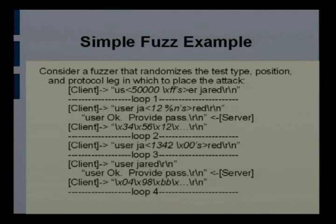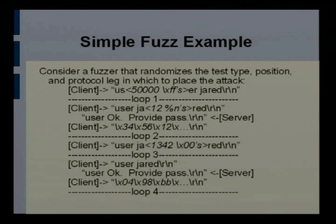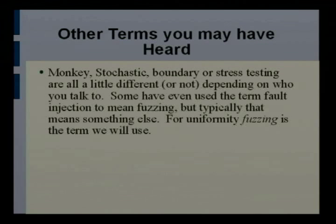In the first loop I send 50,000 FFs — maybe looking for long strings or how it handles non-ASCII data. In the second loop I insert percent-signs into the middle of the username. That's looking for format string bugs. These are called attack heuristics: sending a long string, sending a format string, sending a null byte instead of a carriage return, changing delimiters or line endings. There are a lot of different attack heuristics that should be built into a good fuzzer.